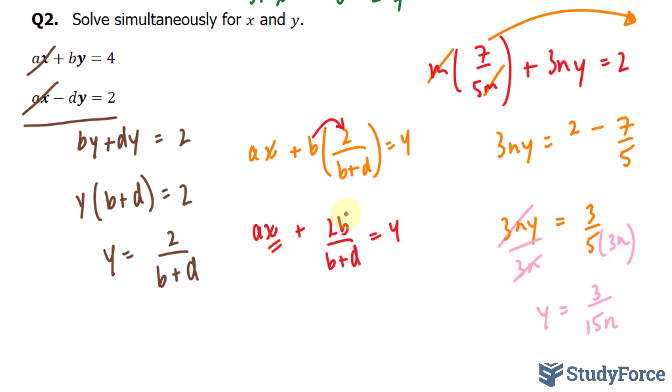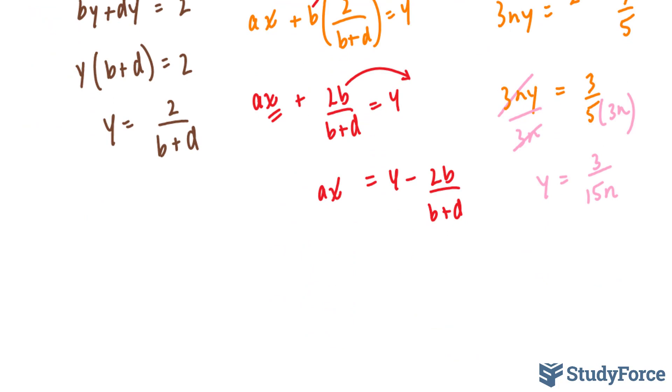Remember, we want to isolate for x. So next, I'll take this term over to the other side. By bringing this term over, it makes it negative. Where we have 4 minus 2b over b plus d. On the left side, we have ax. Our last step is to divide both sides by a. That way, we have x isolated for. Dividing this side by a gives us x on its own. Then we have to divide this term by a and this term by a.